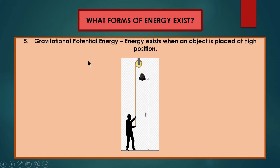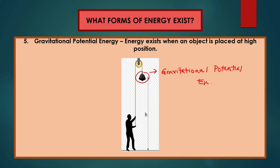Gravitational potential energy is an energy that exists when an object is placed at a high position. The formula for gravitational potential energy is mass multiplied by the gravitational constant and also the height — E = mgh. The higher the height, the higher the energy you can obtain.